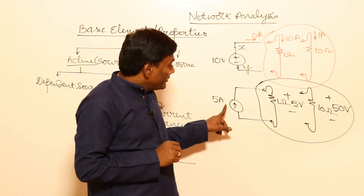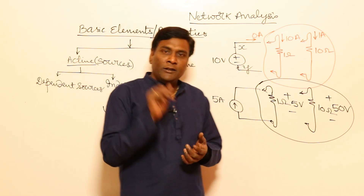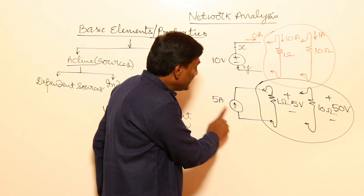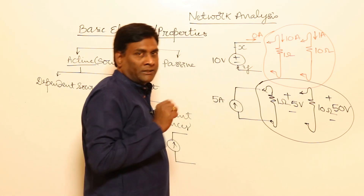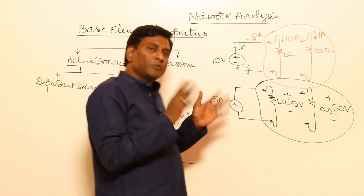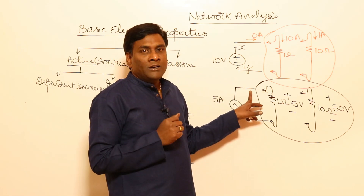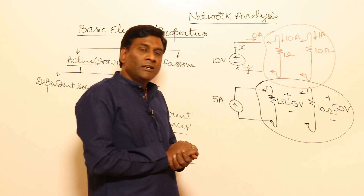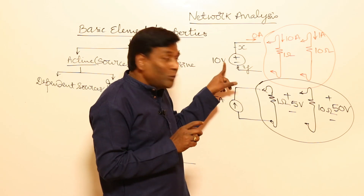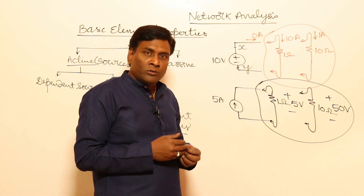For a current source, current is known — 5 amperes entering in this direction. In future, if you want to apply KCL, Kirchhoff's Current Law, it is very easy to analyze because the current entering is 5 amperes. But how much voltage is across this? We don't know. So for a voltage source, KVL applies — voltage rise or drop is known, but current is unknown. For a current source, current is known and voltage is unknown.